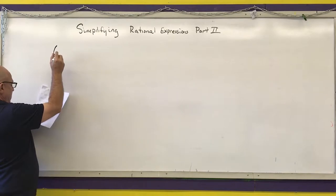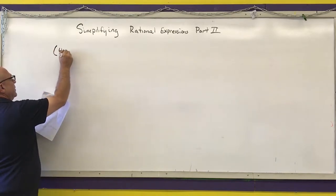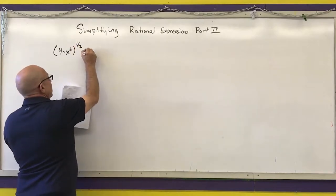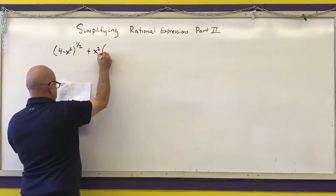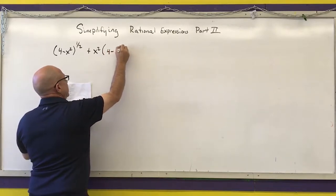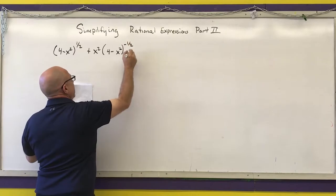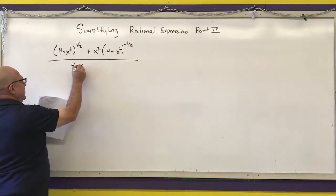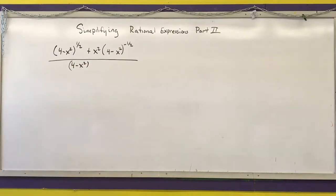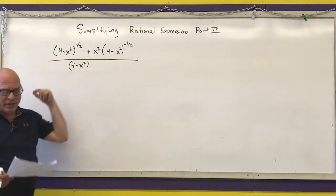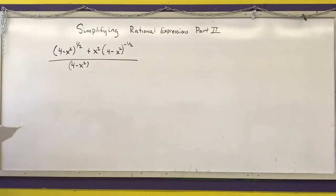The first one I want to simplify is (4 minus x squared) to the one-half, plus x squared times (4 minus x squared) to the negative one-half, over (4 minus x squared). If you look at this, you should see that you have a (4 minus x squared) that appears in every single one of our terms.